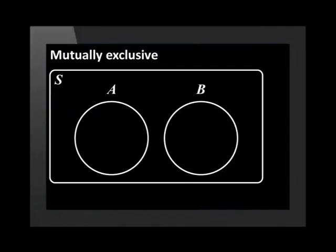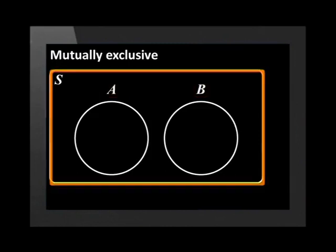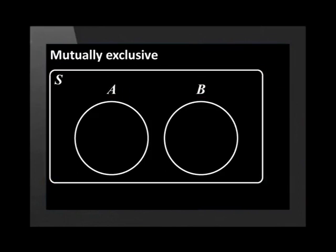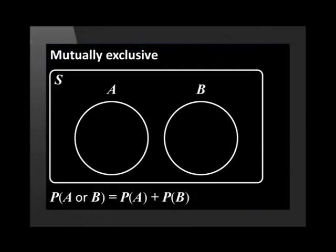This Venn diagram shows two mutually exclusive events, A and B. The rectangle shows a sample space and all events in the experiment. The fact that the circles do not overlap tells us that the events are mutually exclusive and cannot take place at the same time. Therefore, the probability of A or B is equal to the probability of A plus the probability of B.